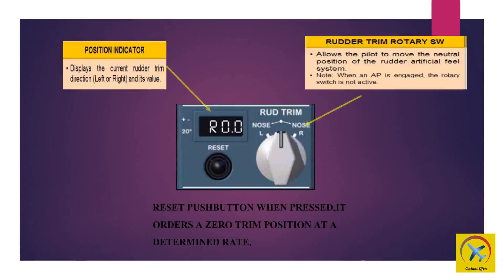The rudder trim position indicator on the center pedestal displays the current rudder trim direction — left or right — and its value. The rudder trim rotary switch allows the pilot to move the neutral position of the rudder artificial feel system. When an autopilot is engaged, the rotary switch is not active. The reset push button, when pressed, orders a zero trim position at a determined rate.